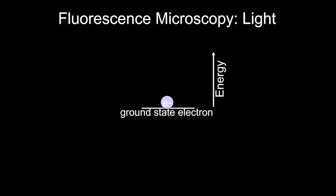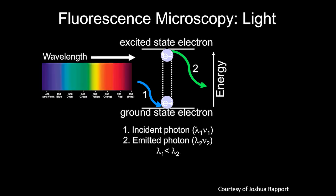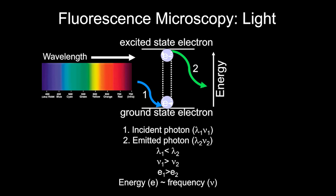When we look at fluorophores — how fluorescence works with something like GFP or an Alexa dye — you have an incident photon exciting an electron. It moves up to an excited state, and on the way down you lose a little bit of energy and get emission at a longer wavelength, i.e., less energy. So the emission wavelength is always longer than the excitation wavelength and lower energy than the incident photon.